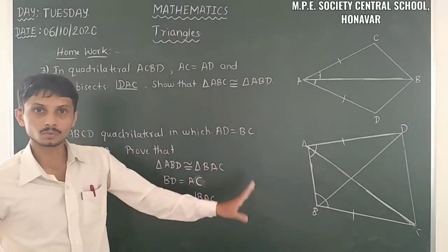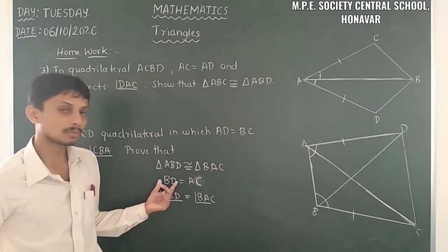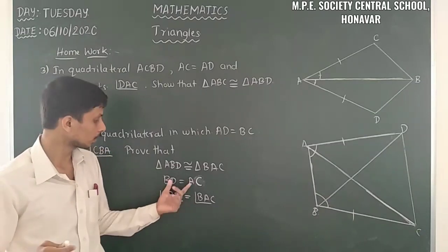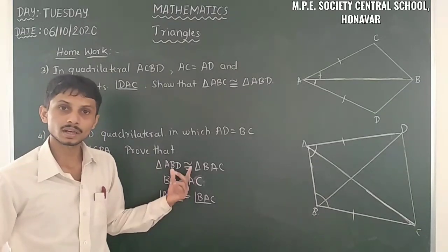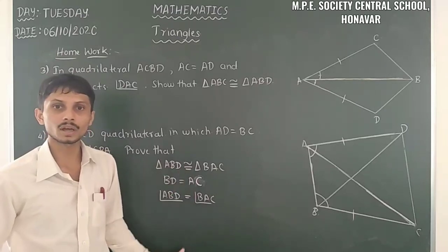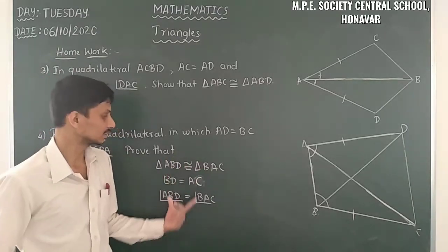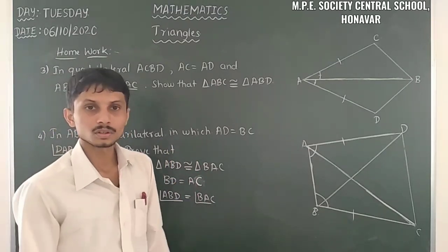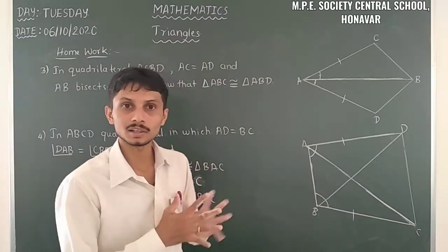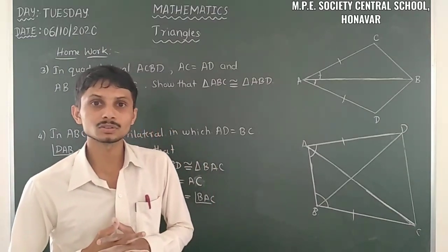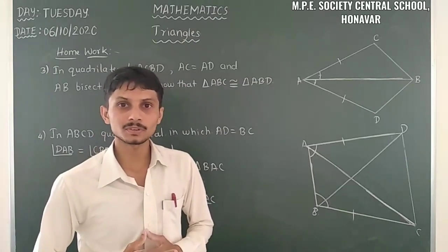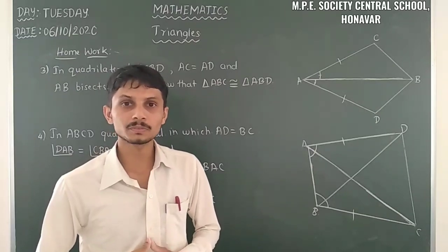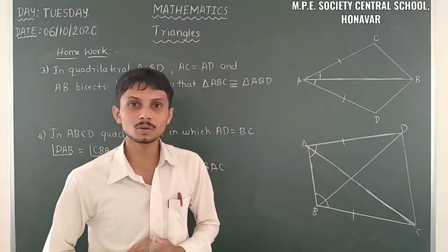For the next homework problem in quadrilateral ABCD: AD equals BC and angle DAB equals angle CBA — prove triangle ABD is congruent to triangle BAC. Find the corresponding sides and angles, arrange the triangles correctly, and apply SAS congruence rule. Those watching for the first time, please subscribe and press the bell icon. Thank you all, be safe and stay home.